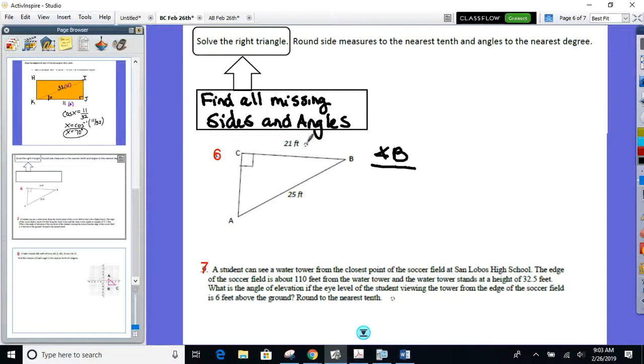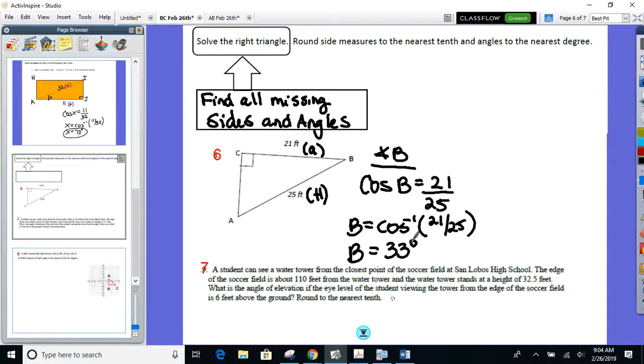So going from angle B, the 21 would be adjacent to angle B and the 25, hypotenuse. So which ratio right now would I use to find angle B? Cosine. So the cosine, I'll put B, angle B, cosine of B is equal to adjacent 21 over hypotenuse 25. Inverse of cosine, so angle B will be equal to the inverse of cosine of 21 over 25. What angle has a cosine of 21 over 25? And what do we, angles are to the nearest degree. Angle B? 33. We're good there?